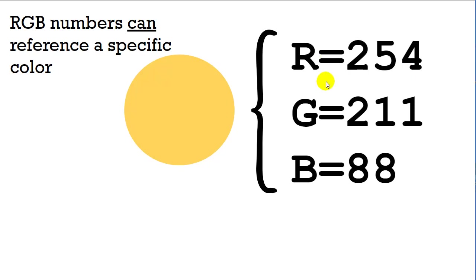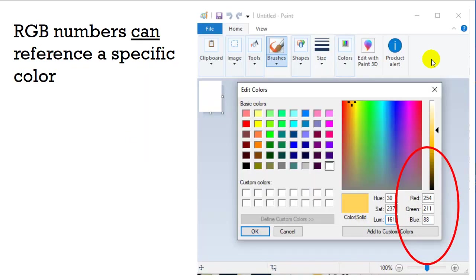The RGB — red, green, blue — numbers can reference a specific color, and many programs use this. Here's Microsoft Paint. Microsoft Paint wants to know what's the red, what's the green, what's the blue, and it'll give you the color based on how you mixed them.